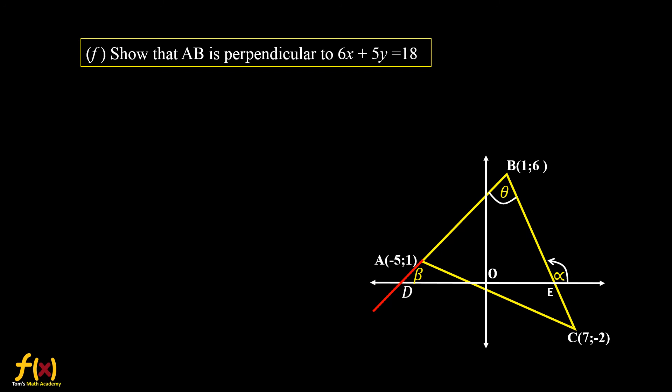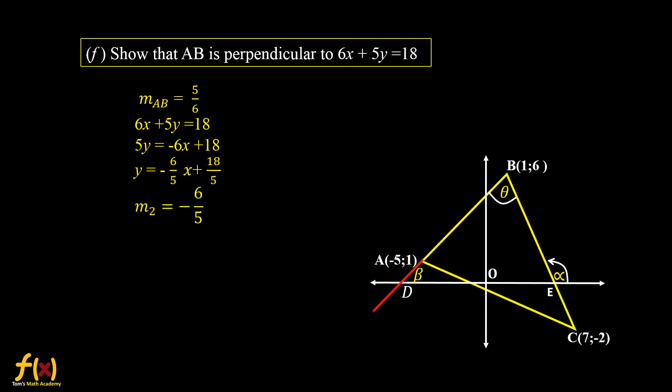Question F: show that AB is perpendicular to the line 6x + 5y = 18. We have already found that the gradient of AB is 5/6. From the equation 6x + 5y = 18, we make y the subject to find the gradient, which is −6/5. Multiplying the two gradients: (5/6) × (−6/5) = −1. Since the product of the gradients equals −1, we conclude that the two lines are perpendicular.